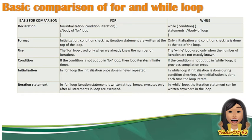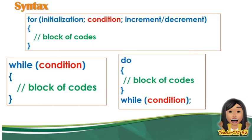Next naman is the iteration statement. Sa for loop, ang iteration statement is written at the top — execute only after all statements in the loop are executed. Samantalang sa while naman, ang iteration statement niya can be written anywhere in the loop. Ang iteration ng for nandito lagi sa taas. Samantalang si while, kahit saang part ng body niya, pwede ninyong ilocate o ilagay yung increment or decrement niya.